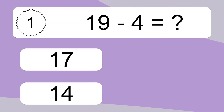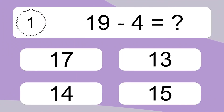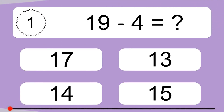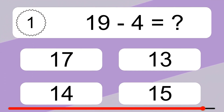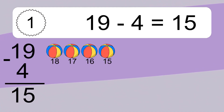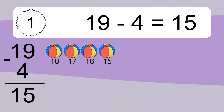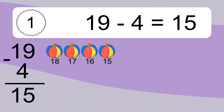19 minus 4 equals what? 19 minus 4 equals 15. Let's count it. 18, 17, 16, 15.